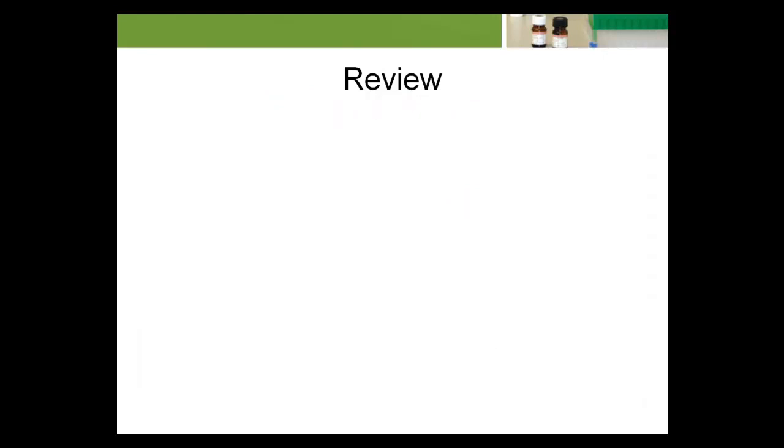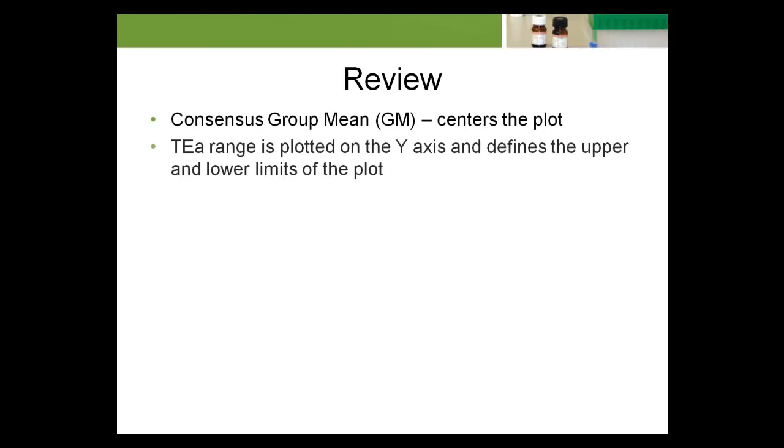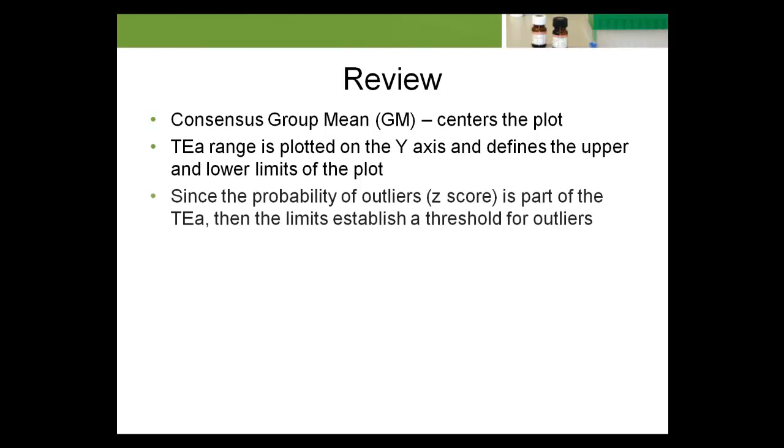Let's review the components making up a total error plot. Consensus group mean centers the plot. TEA range is plotted on the y-axis and defines the upper and lower limits of the plot. Since the probability of outliers, z-score, is part of the TEA, then the limits establish a threshold for outliers.